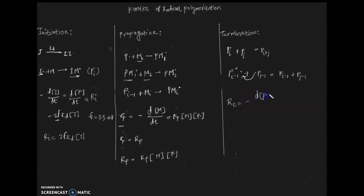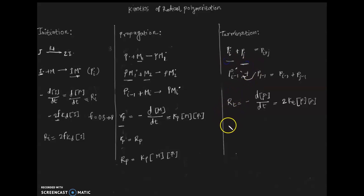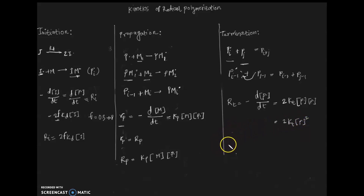The rate of termination, or the rate of decrease of polymer radical concentration, equals two times the termination constant times the polymer radical concentration squared, since this termination reaction depends on the concentration of both polymer radicals.